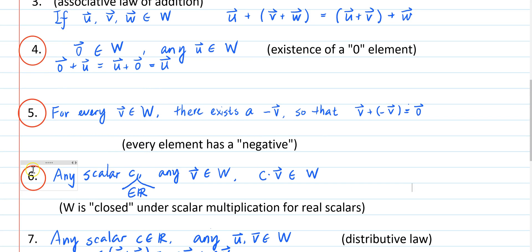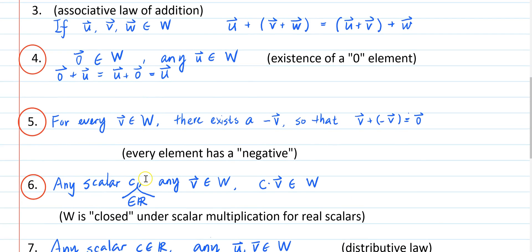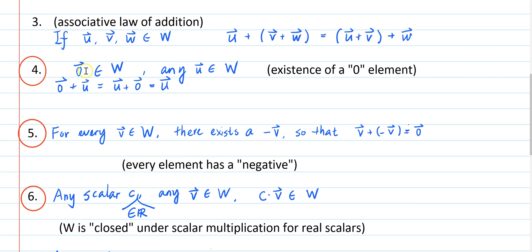So if you verify that axiom 6 is true, which means this works for any scalar, then it should work for the scalar c equal to 0 which means the zero vector should be in W. And it should also work for the scalar c equal to negative 1, which means the negative of the element should be in W. So that means if we are verifying axiom 6 first, we have also verified axioms 4 and 5 at the same time.